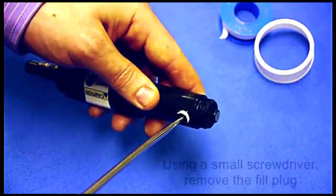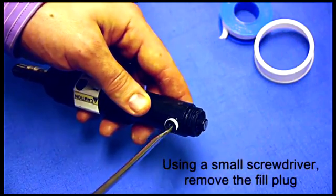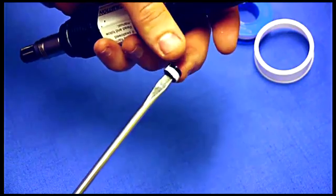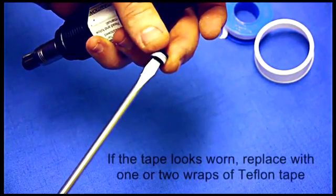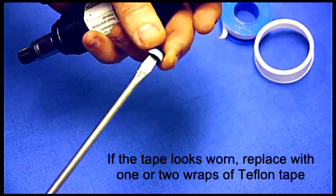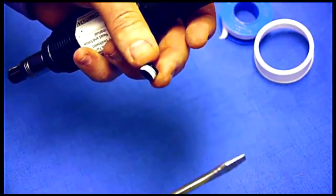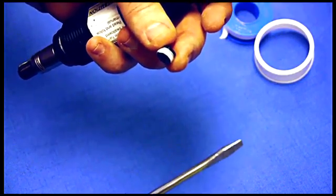Next you want to remove the fill plug and check to make sure there's an adequate amount of pipe tape still remaining on the fill plug. Here I see there's still a good amount so I don't need to replace it. If there's not enough, you want to first remove the excess pipe tape and then place about one to two wraps of pipe tape around the fill plug, no more than two.